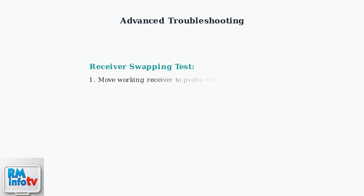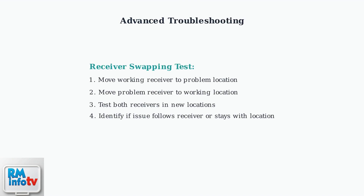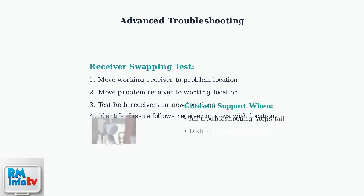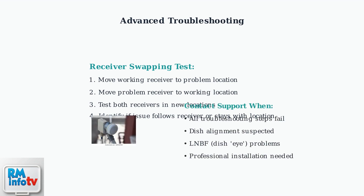For advanced troubleshooting, if you have multiple receivers, try swapping them between locations. This helps determine whether the problem is with the receiver itself or with the cable line and connections. If none of these steps resolve the issue, it's time to contact Shaw Direct customer support. Professional assistance may be needed for dish alignment problems or LNBF issues — that's the eye of the dish that receives the satellite signal.